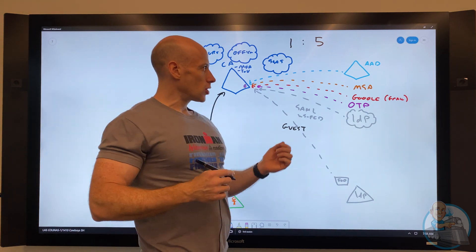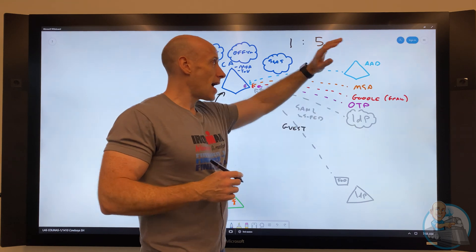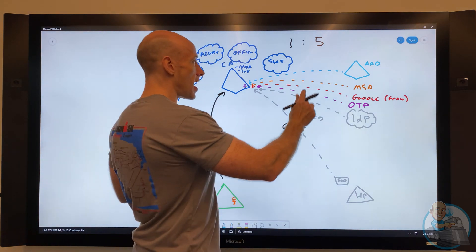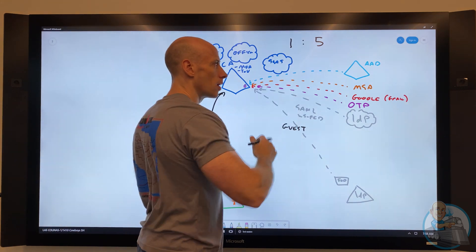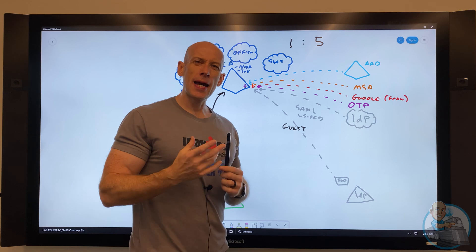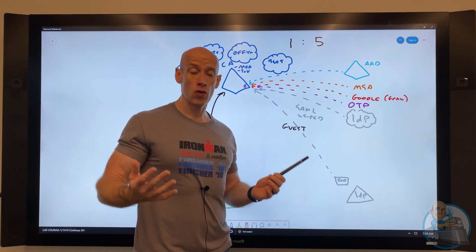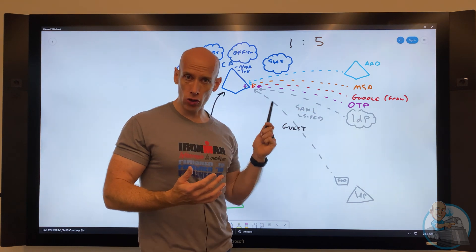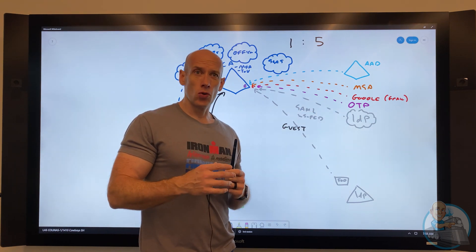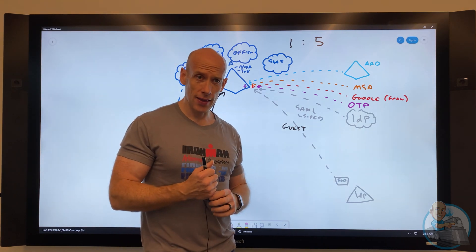There's often a question, hey, look, I did do an acquisition. I have these other Azure ADs. I want everyone in that org to automatically be B2B'd into this org. And there's not really a capability directly to do that today. Now, I can easily write scripts that can perform that logic, that can handle joiner, mover, lever-type scenarios as well. There are third parties that have solutions out there.